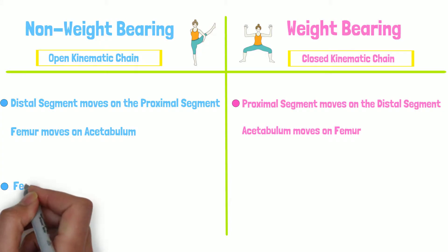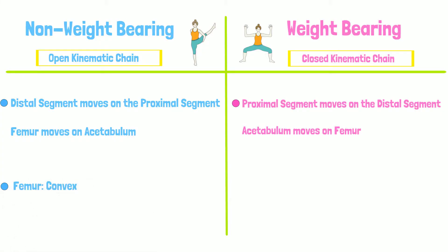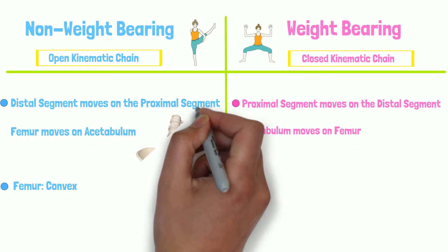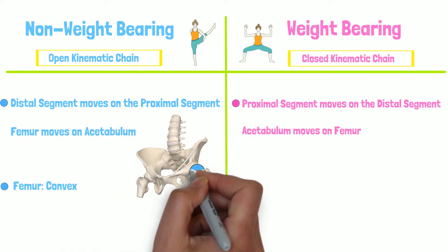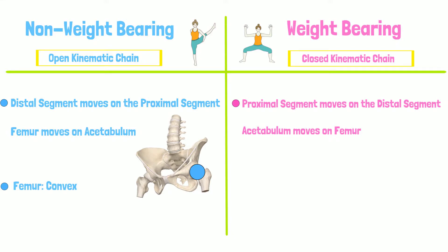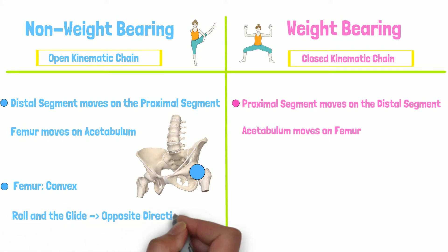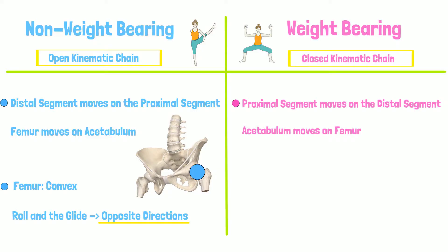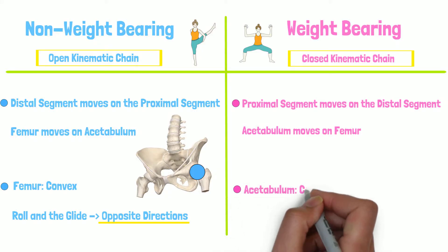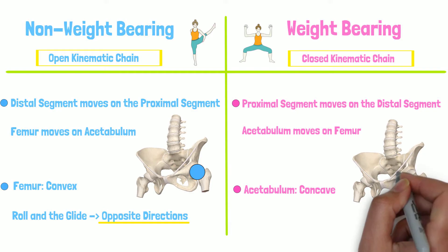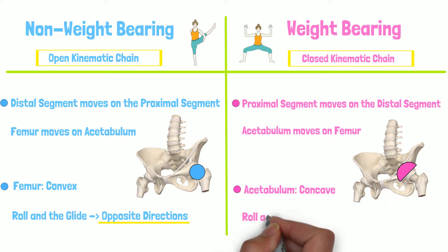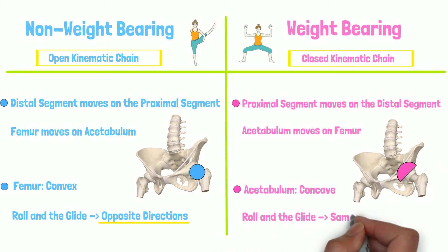In non-weight-bearing, the convex femur dictates the kinematics. When a convex member moves on top of the concave member, the roll and glide will occur in opposite directions. In weight-bearing, the acetabulum dictates the kinematics, so a concave surface moves on the convex, and the roll and glide will occur in the same direction.